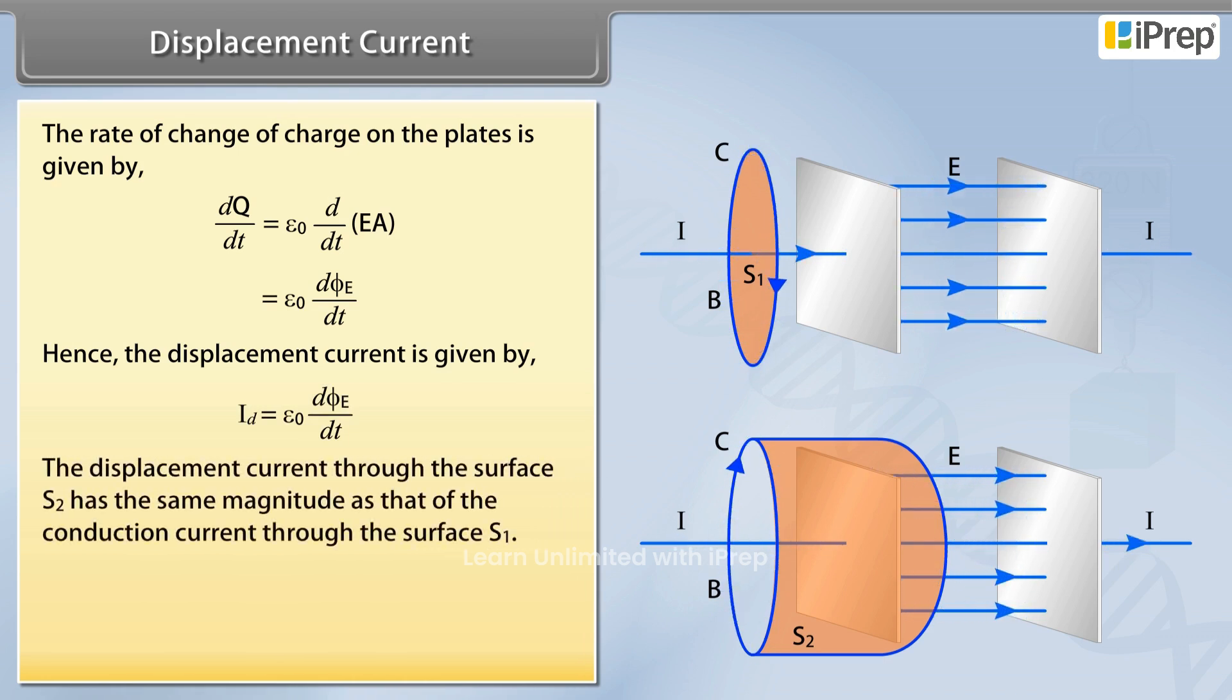The displacement current through the surface S2 has the same magnitude as that of the conduction current through the surface S1.